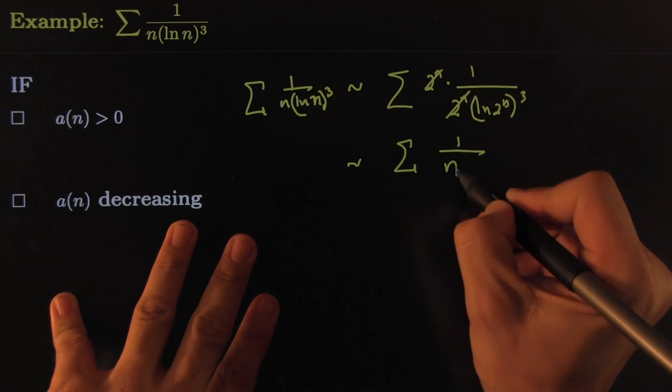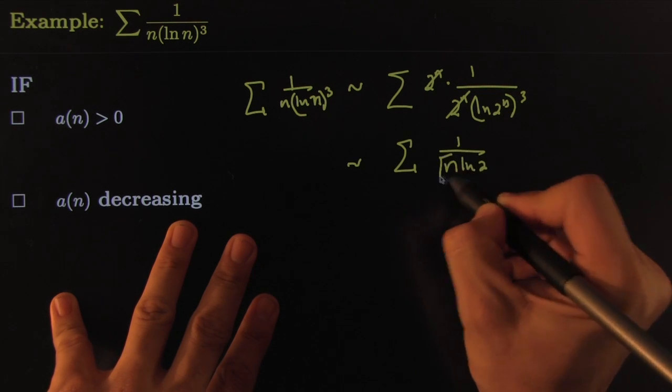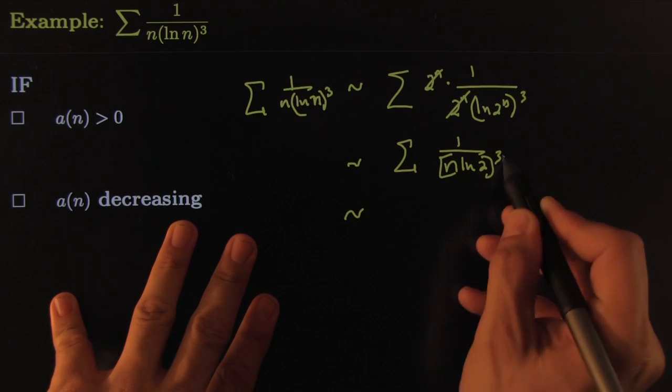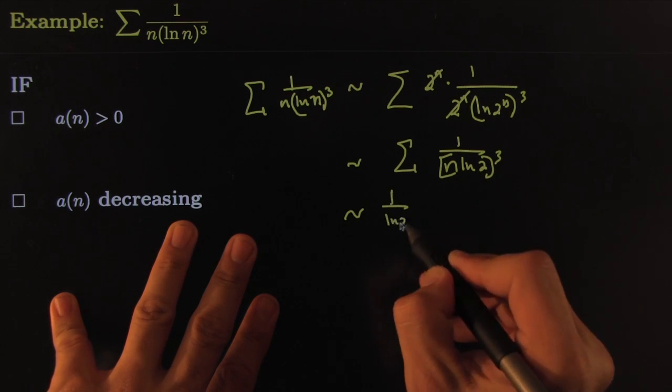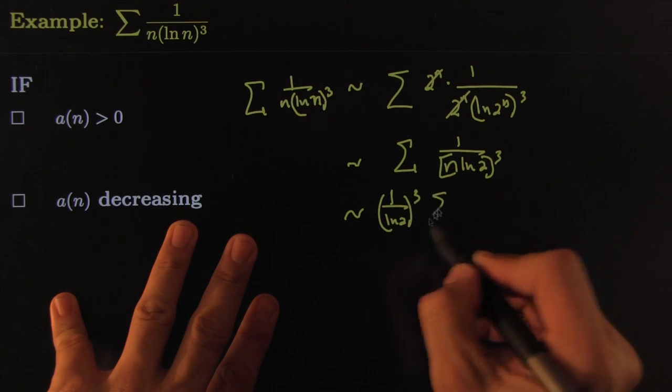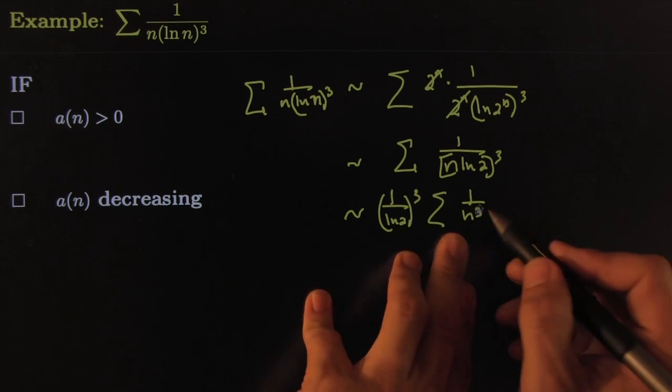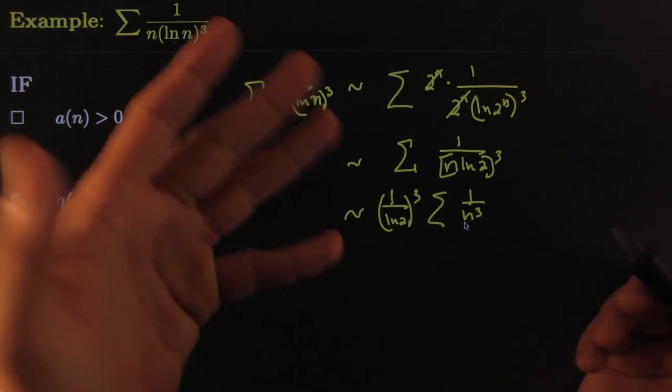So it's 1 over n ln of 2 still to the third power. You can simplify this part, it's just a constant, so it's 1 over ln of 2 to the third power. And inside you're left with 1 over n to the third, clearly a p series where p is bigger than 3.